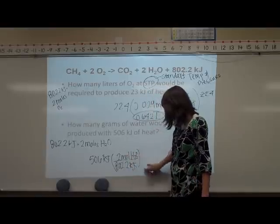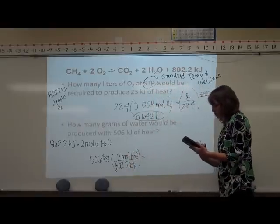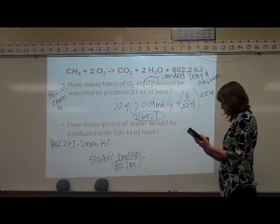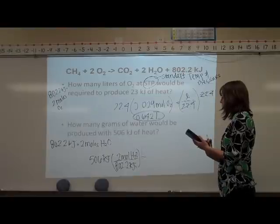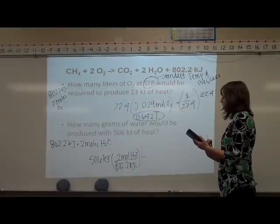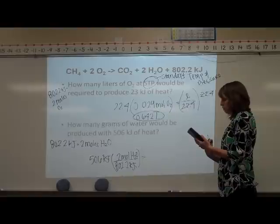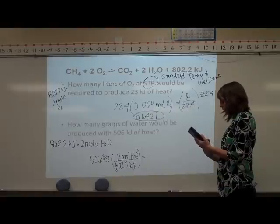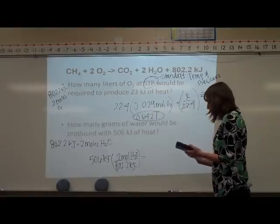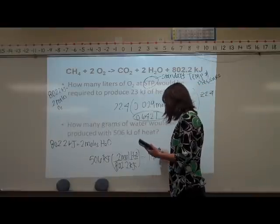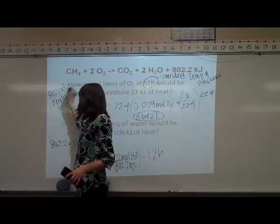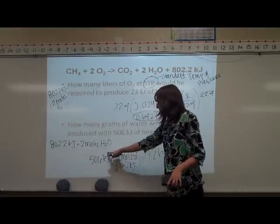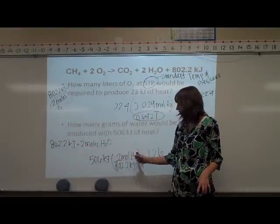We're going to put 802.2 kilojoules on the bottom so that it will cancel, and then we're going to put two moles of water on top. Once we do that, we'll have our answer of moles. We're going to take 506 divided by 802. I made a mistake. Hold on. 802, and then we're going to times the answer by 2. That will give us 1.26.